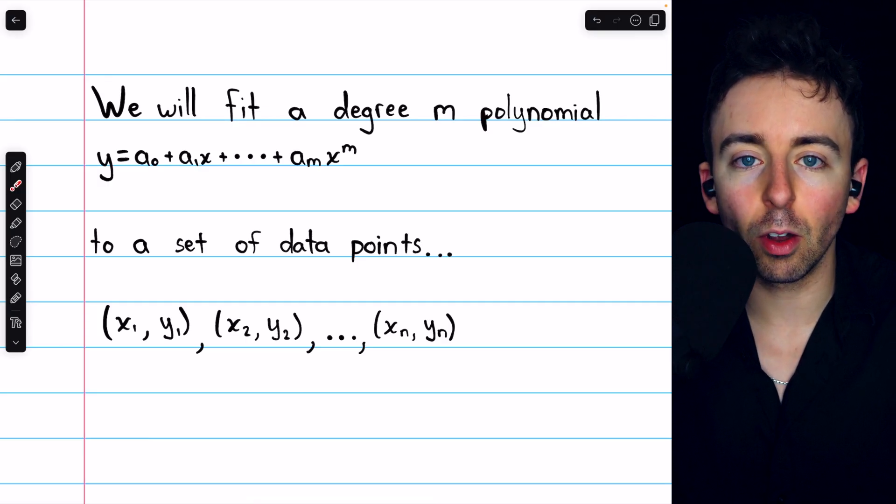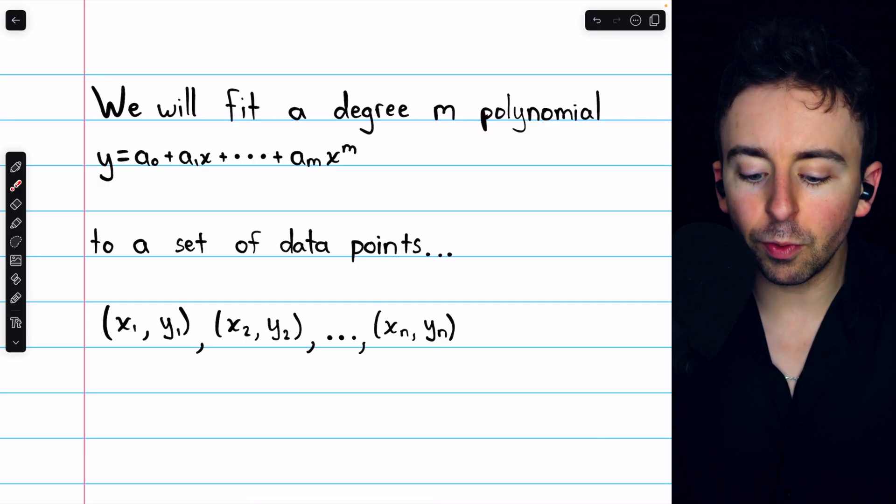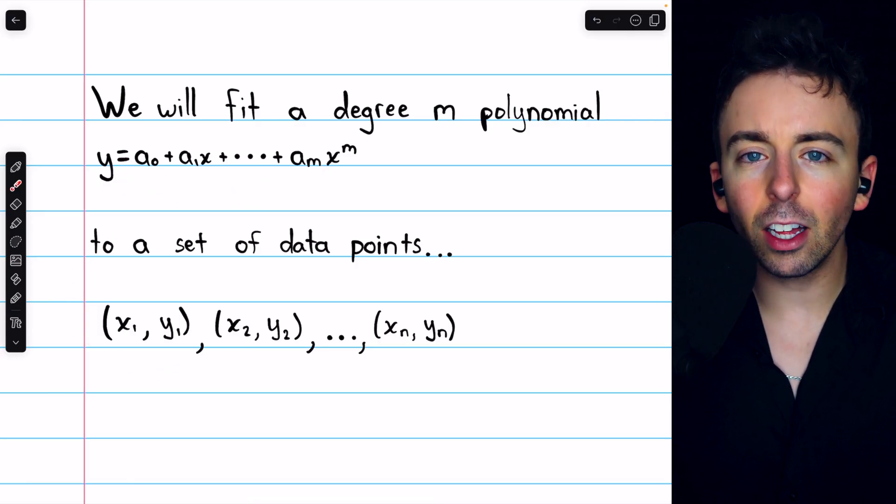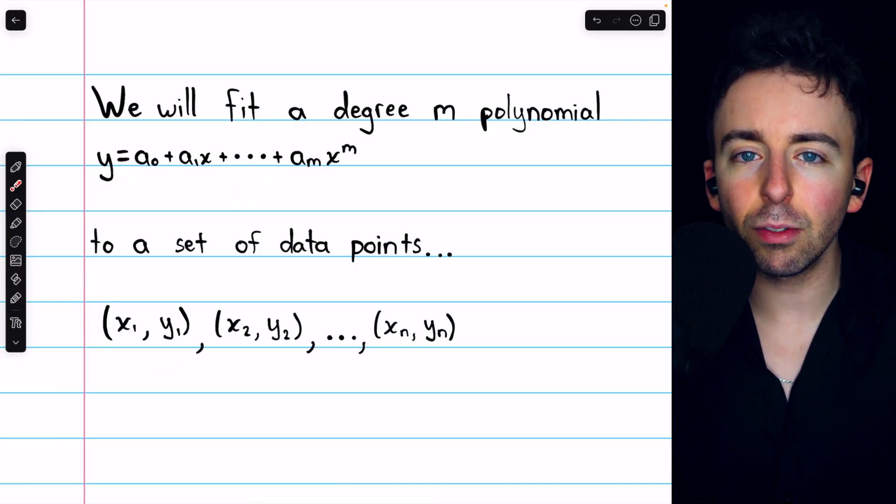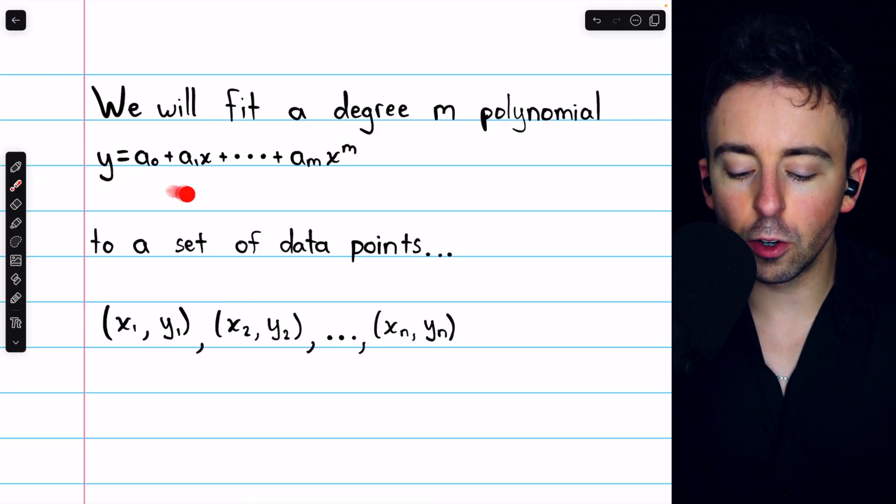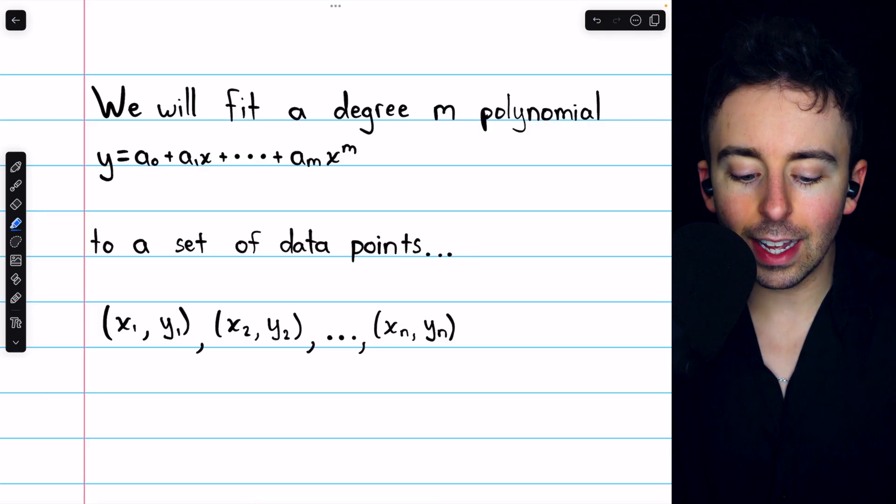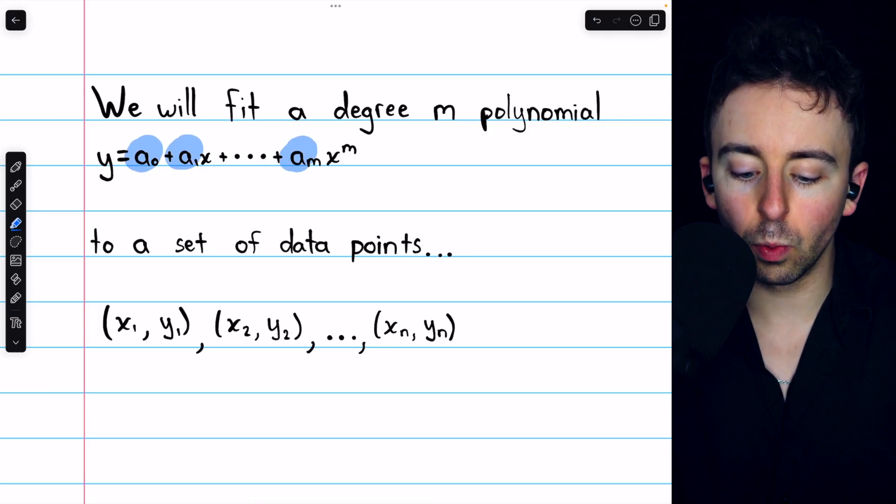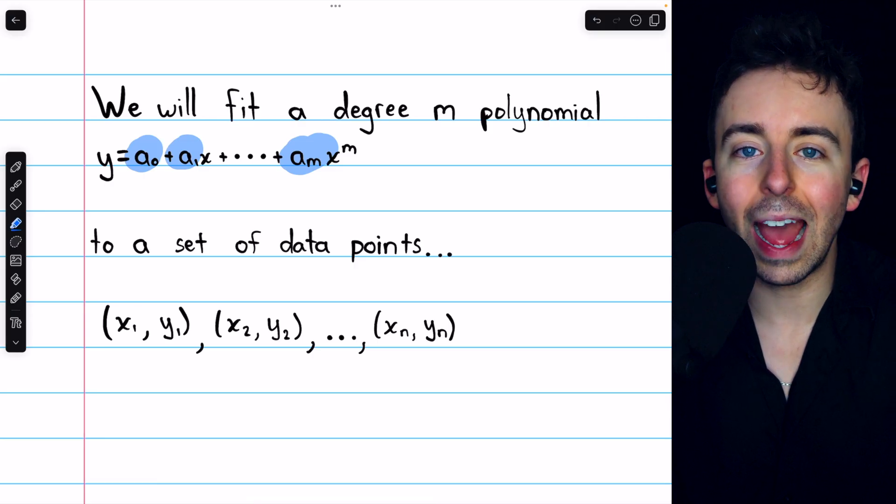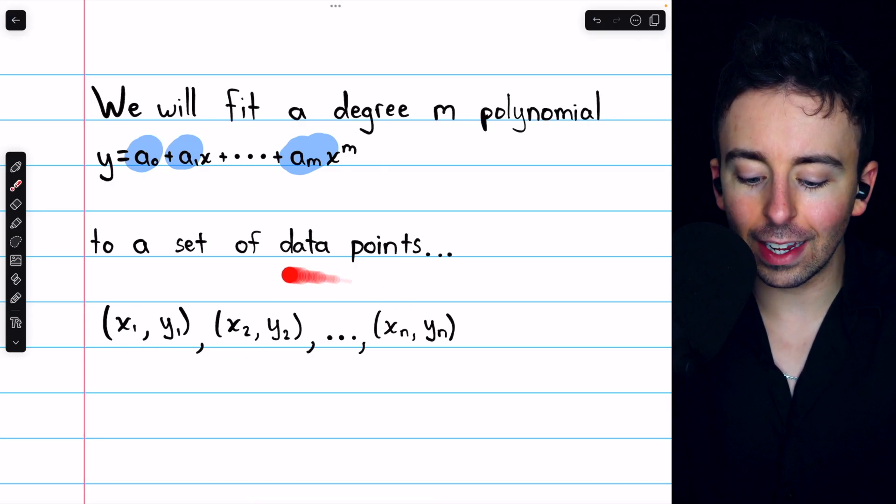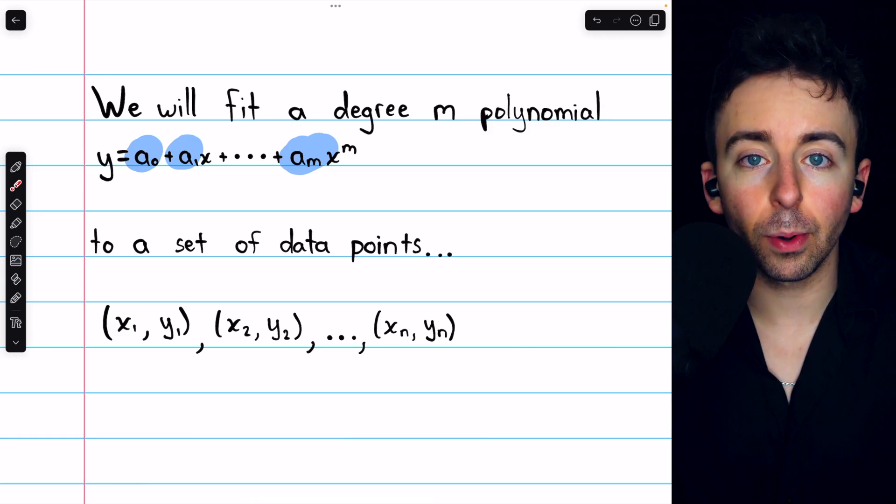The methods we've discussed so far can be used to fit a degree M polynomial to a set of data points. And I'll go over how to use this method in this more general context. So this is an arbitrary degree M polynomial. The idea is that we're going to find the coefficients a0, a1, and so on through a_M that create a polynomial best fitting a given set of data points.